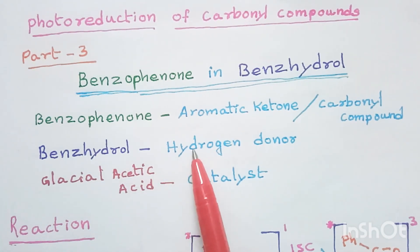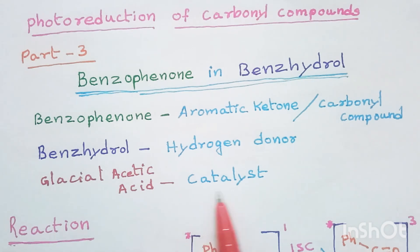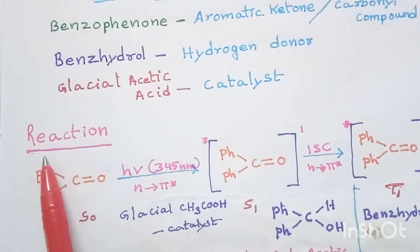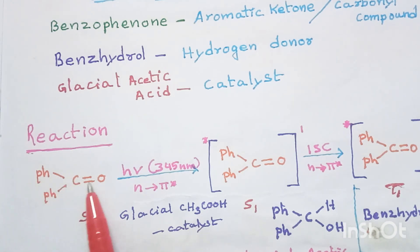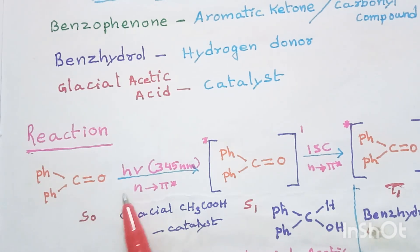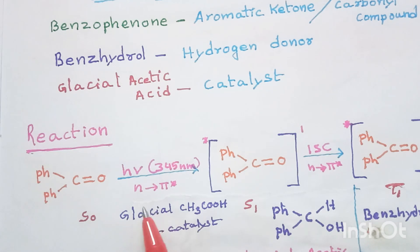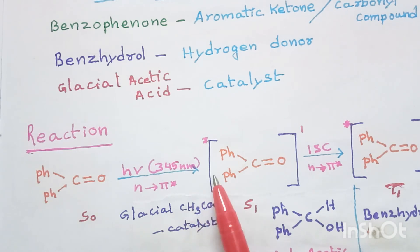Glacial acetic acid is the catalyst. In the reaction, benzophenone — that is Ph-Ph-C=O — in ground state S0, when irradiated by UV light of 345 nanometers in presence of glacial acetic acid catalyst, gets excited via n to π* transition and enters the singlet excited state S1.